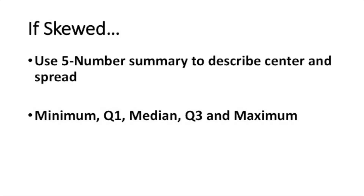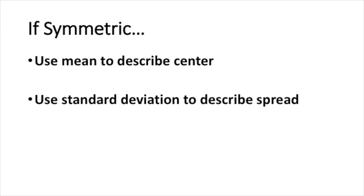One reason we care about the shape of a distribution is because it tells us which descriptive statistics to use for the center and spread. If you have a skewed distribution, you should use the five-number summary: the minimum, first quartile, median, third quartile, and maximum. For a symmetric distribution, use the mean to characterize the center and the standard deviation to describe the spread.